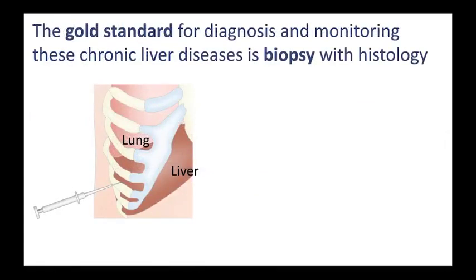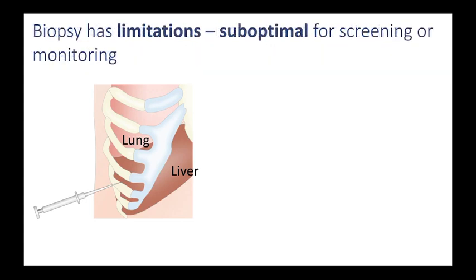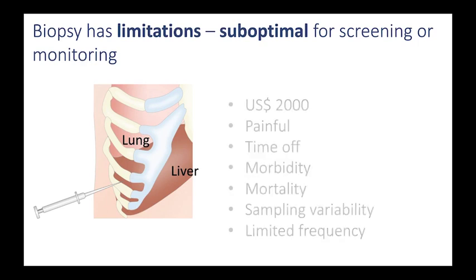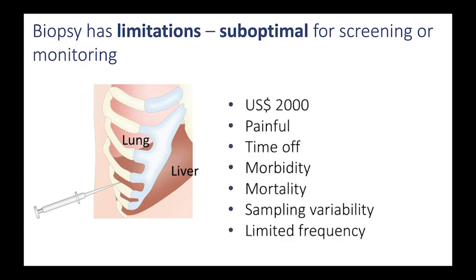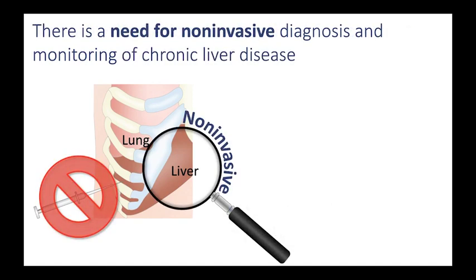Now the gold standard for diagnosing and monitoring these histologic abnormalities that are the underpinning of chronic liver diseases is biopsy with histology analysis. But biopsy has limitations which make it suboptimal for screening and monitoring, and some of the most important limitations — including its expensiveness, painfulness, and potential for morbidity and mortality — are summarized on this slide. Because of the limitations of biopsy, there is a need for non-invasive diagnosing and monitoring of chronic liver disease.